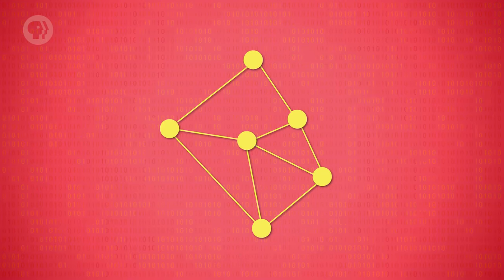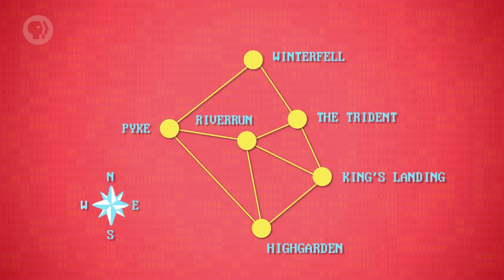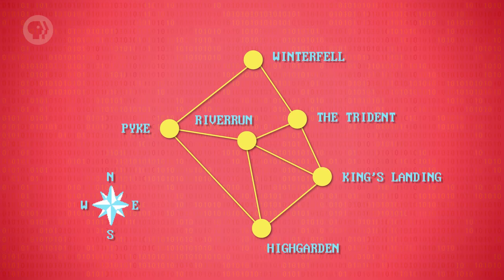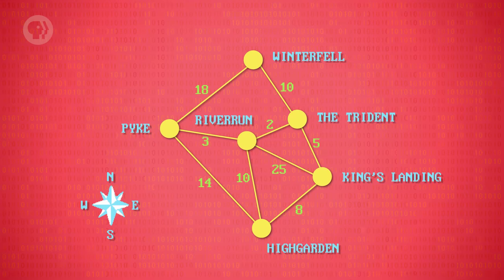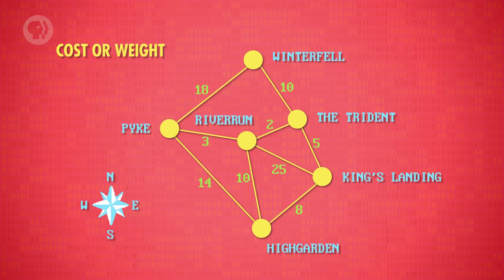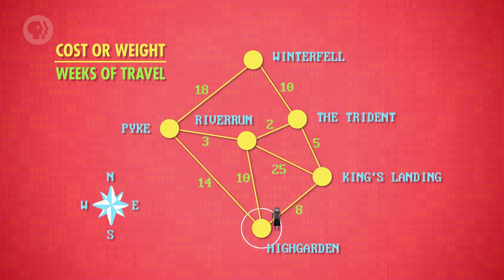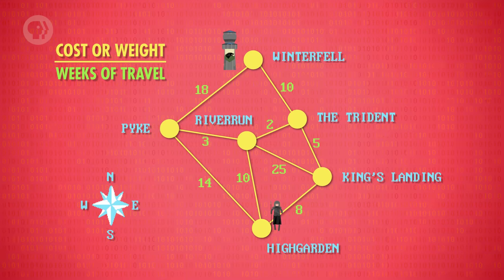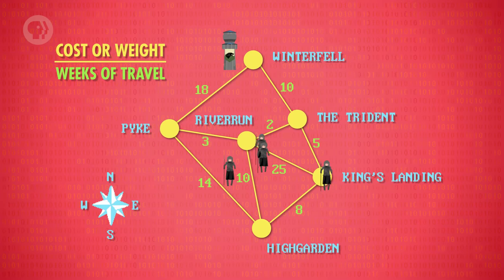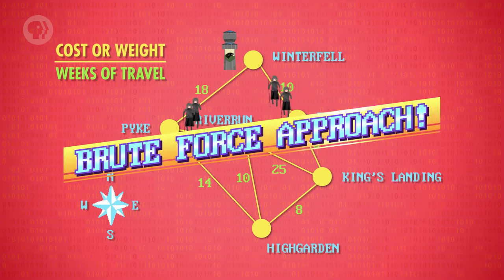There are literally dozens of sorting algorithms we could review, but I want to move on to my other favorite category of classic algorithmic problems — graph search. A graph is a network of nodes connected by lines. You can think of it like a map, with cities and roads connecting them. Routes between these cities take different amounts of time, and we can label each line with what is called a cost or weight — in this case, it's weeks of travel. Now let's say we want to find the fastest route for an army at Highgarden to reach the castle at Winterfell. The simplest approach would be to try every single path exhaustively and calculate the total cost of each — that's a brute force approach.